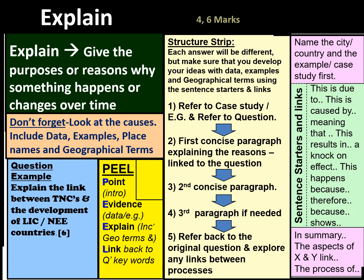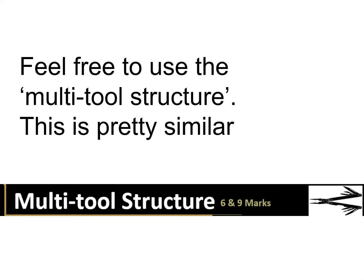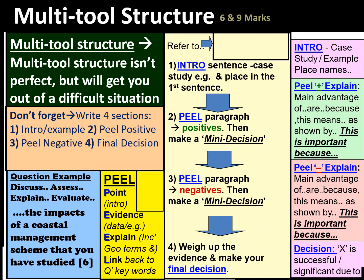The first question has an explain command word. For explain questions, the structure is: number one, introduce; then two or three PEEL paragraphs — in the green box you can see what your PEEL paragraphs should look like. Include the AO2 explain words: 'this means that,' 'this results in.' In an explain question you don't technically need a conclusion, but it's always good practice to include one. Feel free to use the multi-tool structure if extended questions are difficult for you. The multi-tool structure is based on evaluating positives, negatives, and making a final decision — pause to look at the right-hand side for your structure.